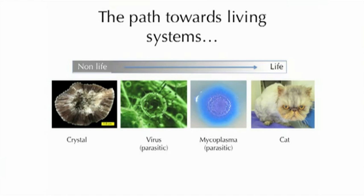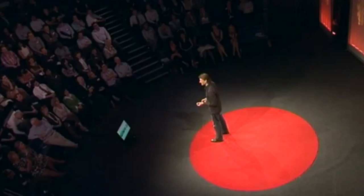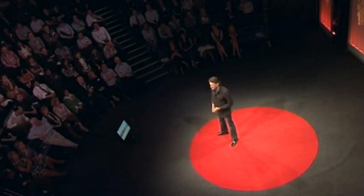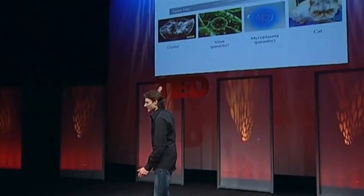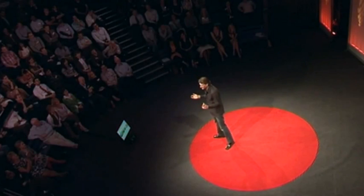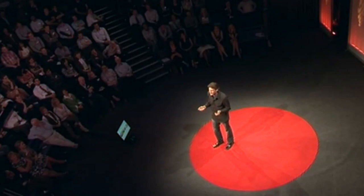Take one example: a virus is a natural system, but it's very simple. It doesn't really satisfy all the requirements or have all the characteristics of living systems, and is in fact a parasite on other living systems in order to reproduce and evolve. What we're going to be talking about tonight are experiments done on the non-living end of this spectrum — actually doing chemical experiments in the laboratory, mixing together non-living ingredients to make new structures that might have some of the characteristics of living systems. So really what I'm talking about is trying to create a kind of artificial life.